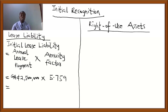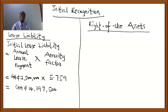We multiply 2.5 million by the annuity factor of 5.759 and arrive at a figure of 14,397,500. This is the initial lease liability. After calculating the initial lease liability, we now go on to calculate the initial carrying amount of the right of use asset.